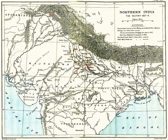The event is known by many names, including the Sepoy Mutiny, the Indian Mutiny, the Great Rebellion, the Revolt of 1857, the Indian Insurrection, and India's First War of Independence. The rebellion began on 10 May 1857 in the form of a mutiny of sepoys